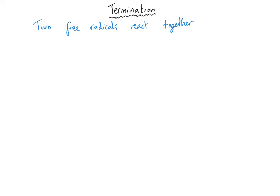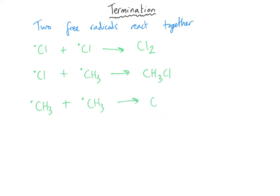In termination reactions, two free radicals react together and are removed from the reaction mixture. There are three potential termination steps. First, one chlorine free radical reacts with another to remake the chlorine molecule. Second, a chlorine free radical reacts with a methyl radical to make more chloromethane — the desired product. Third, a methyl free radical reacts with another methyl free radical to make ethane (C₂H₆, or CH₃CH₃). In each case, the products are stable, unlike the free radicals from which they formed.